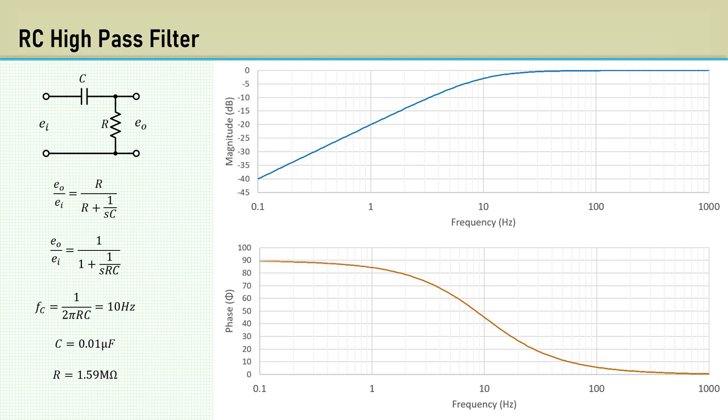Notice as we go low in frequency, the phase shift is 90 degrees. So all we need to do is put two of these in series to get our desired 180 degrees of phase shift that we need.